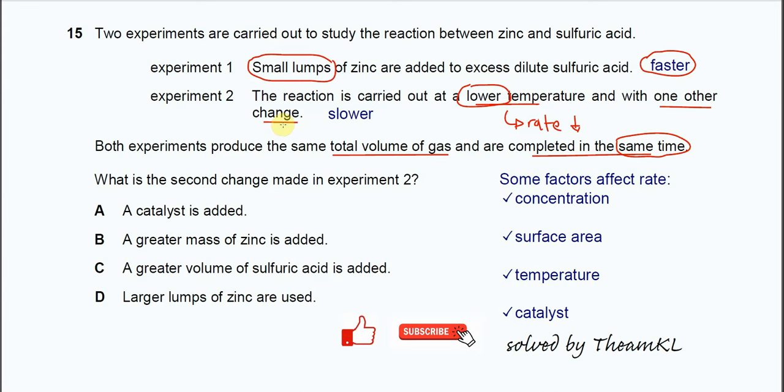So what are the factors that will make the rate of reaction faster? We must put catalyst. When we put catalyst, we know that the rate of reaction will increase so it becomes faster. Therefore answer is A.